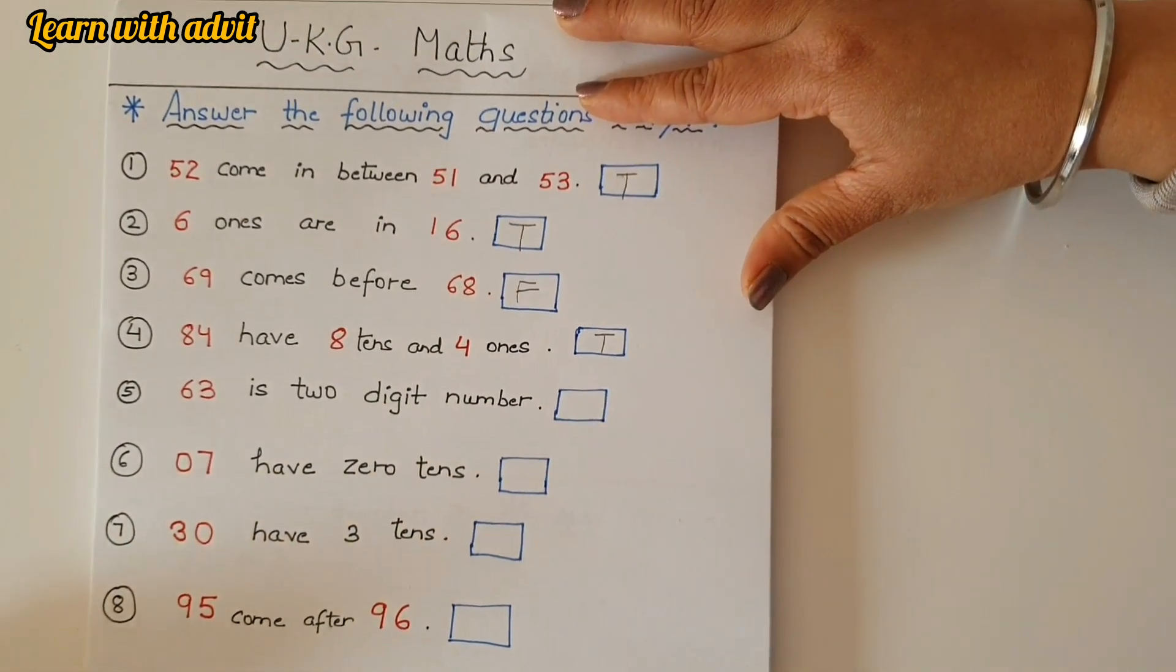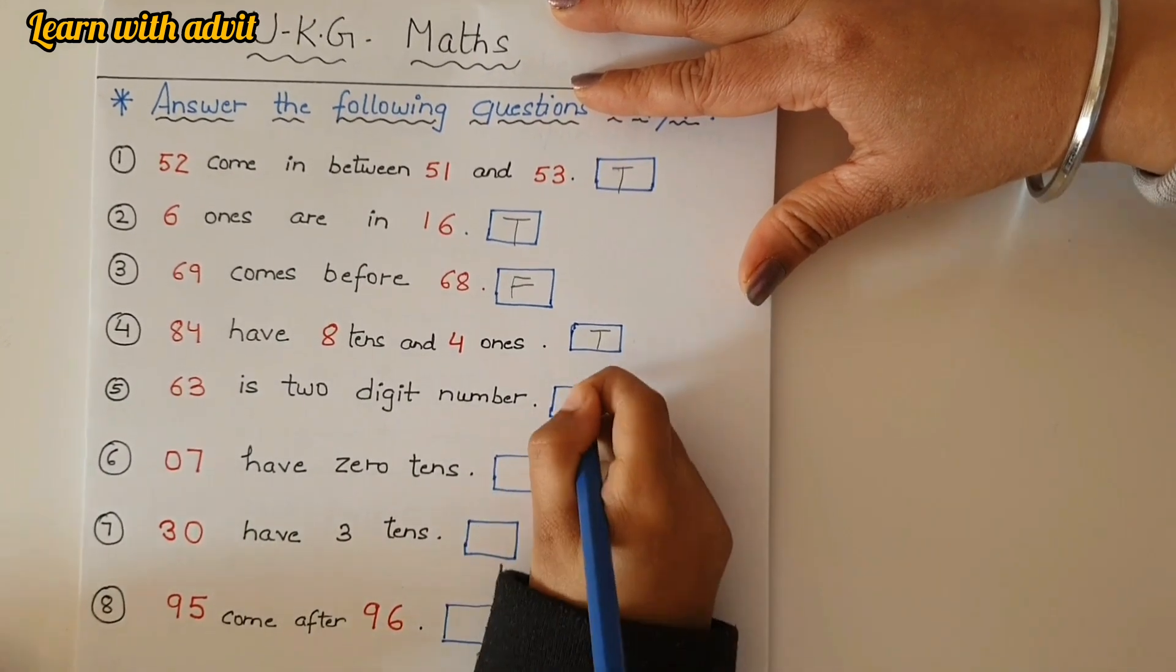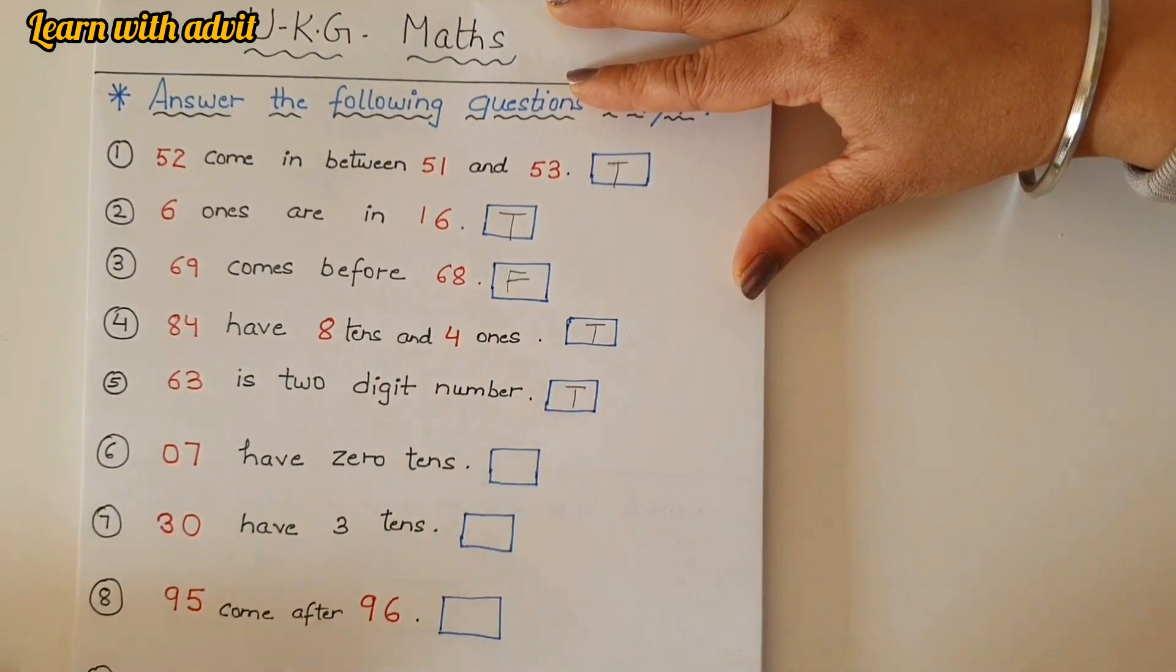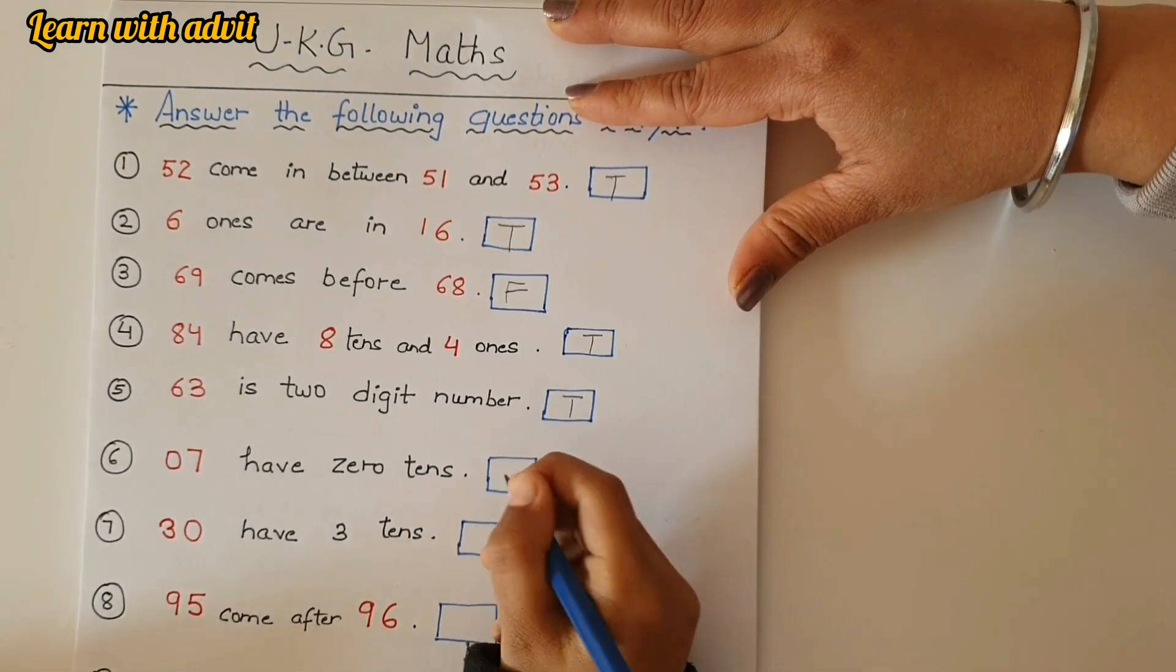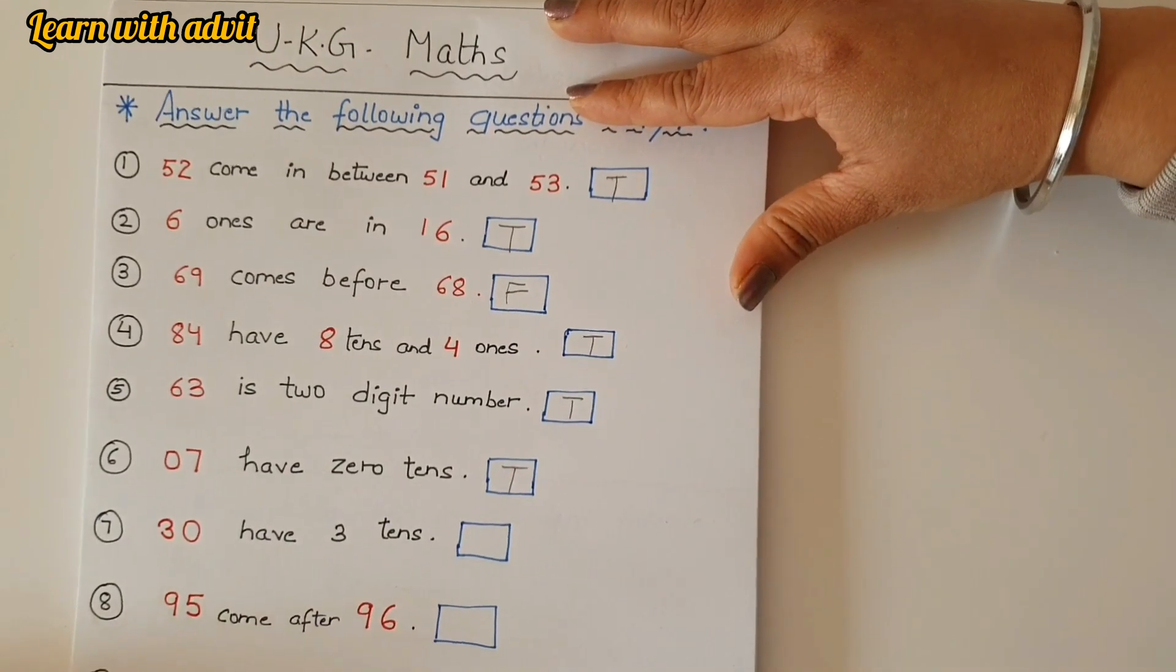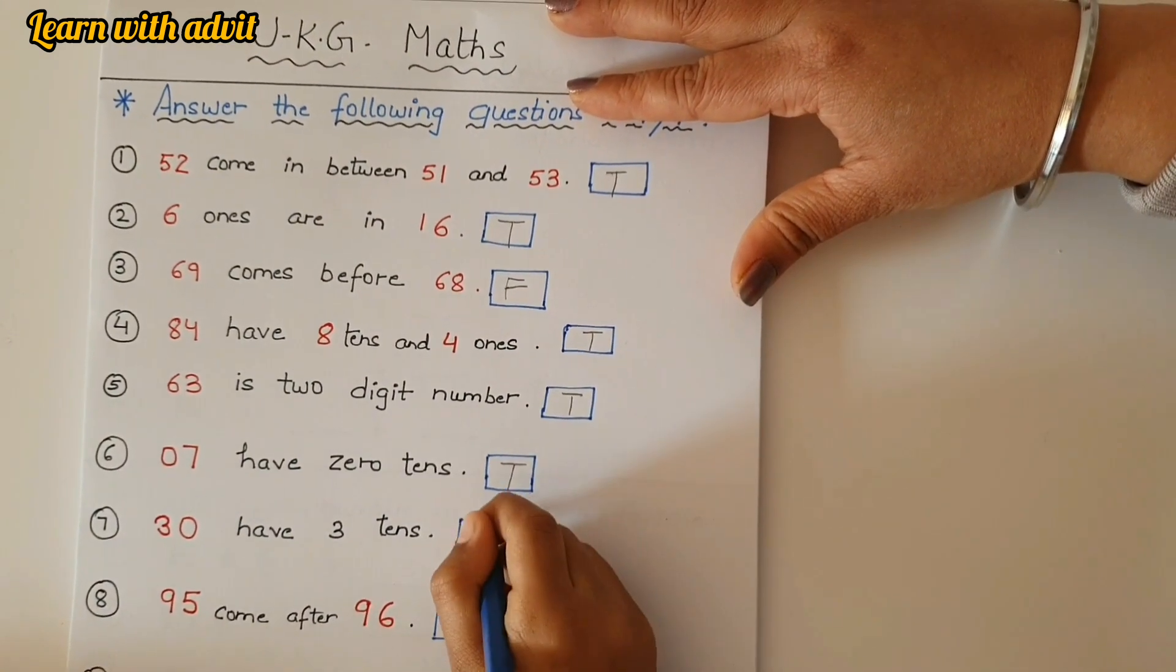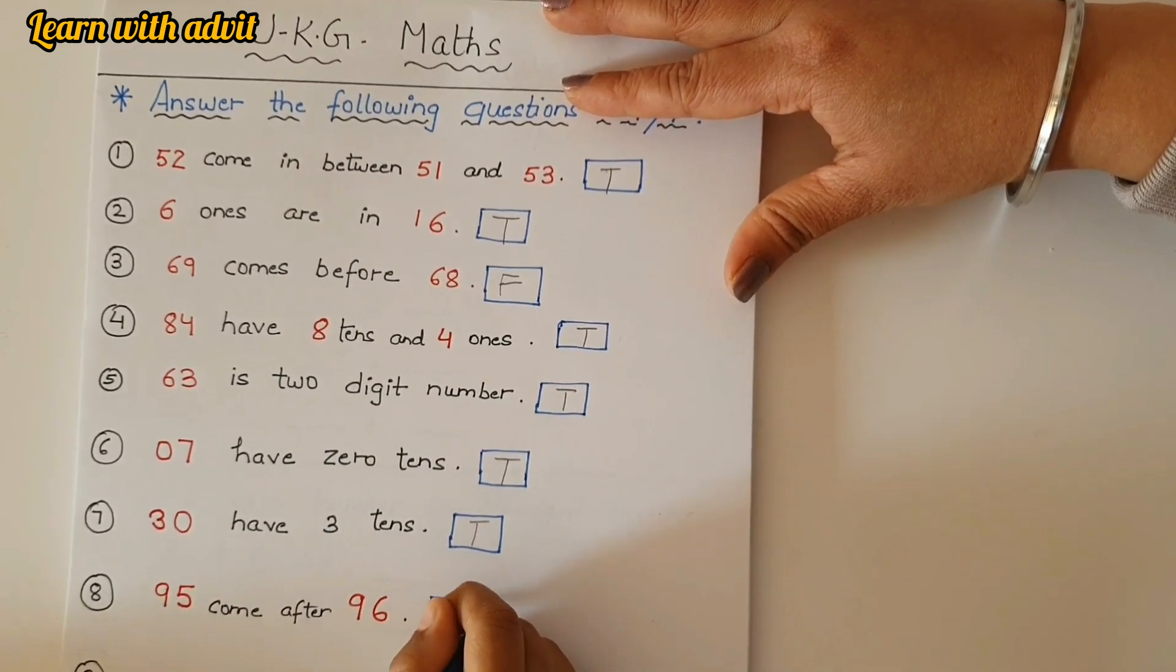84 have eight tens and four ones. Yes, it does have eight tens and four ones. Very good. 63 is two digit number. Yes. Seven have zero tens. Yes, very good. 30 have three tens. Yes. 95 come after 96. No.